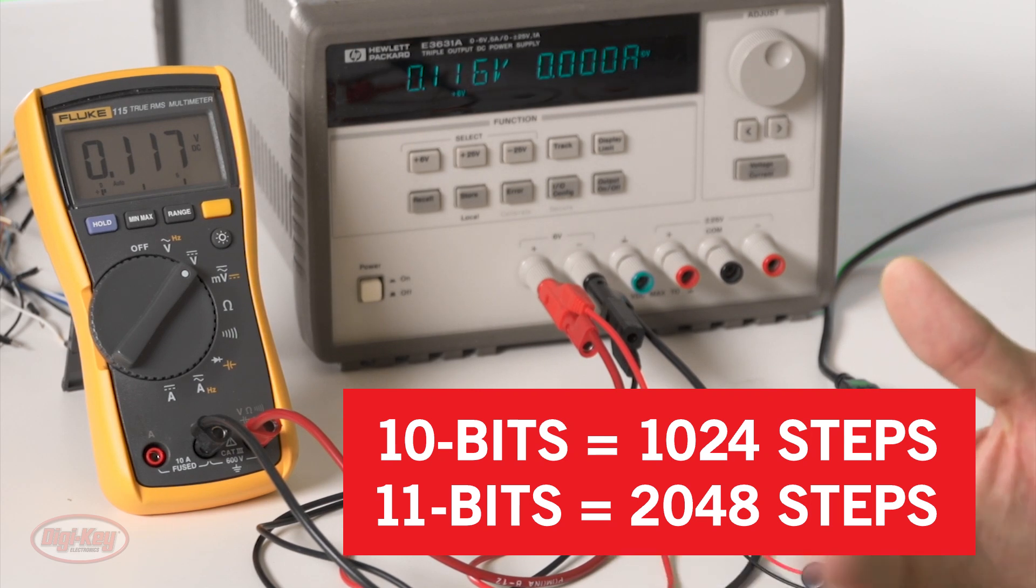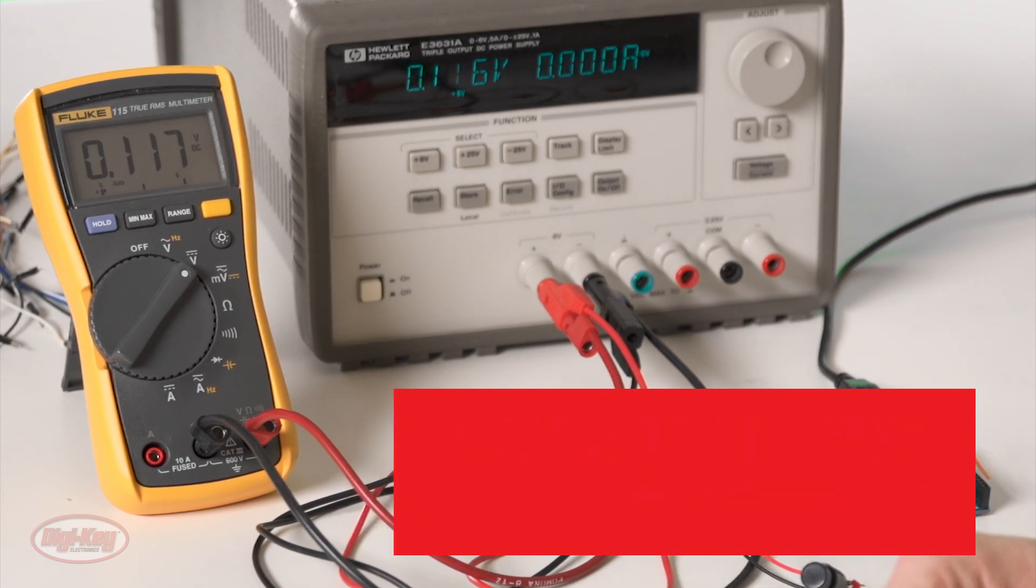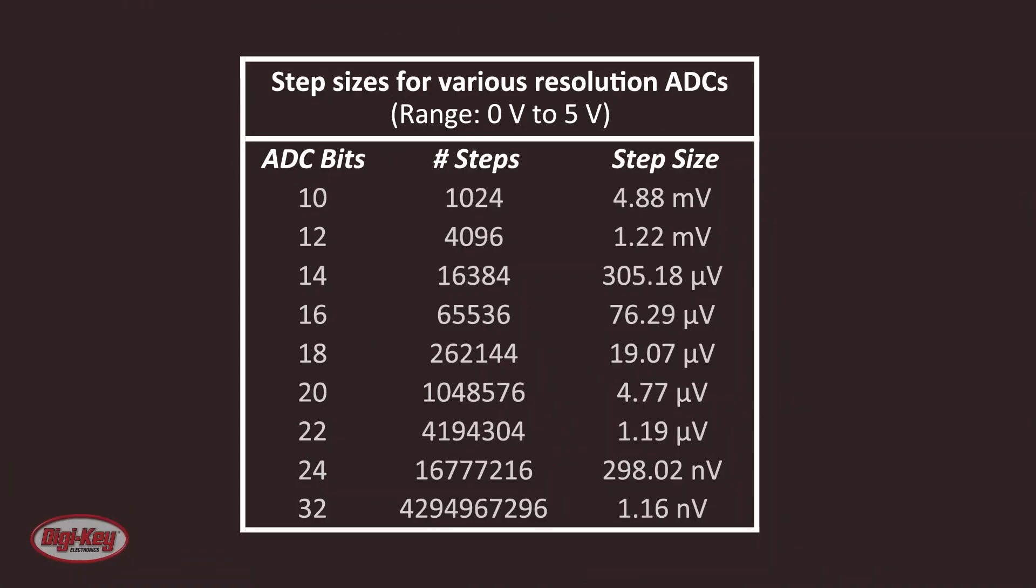So if I needed steps that are about 2.5 millivolts with a 5-volt range, I would just need to get an 11-bit ADC. And there are ADCs that go beyond 20 bits, so you can get very small steps.